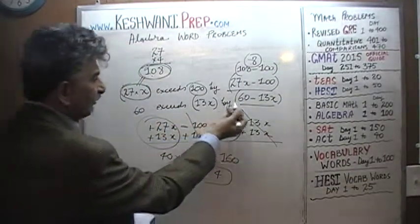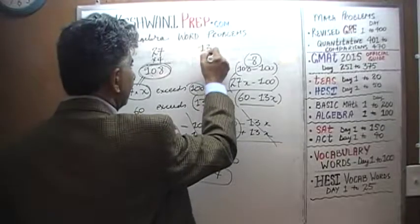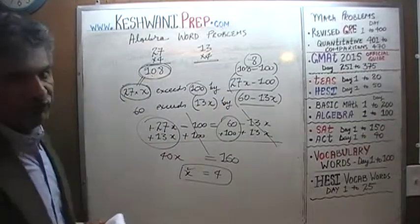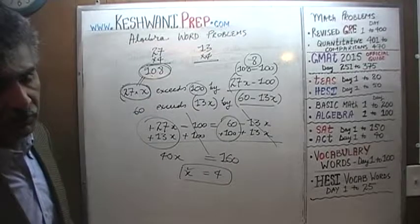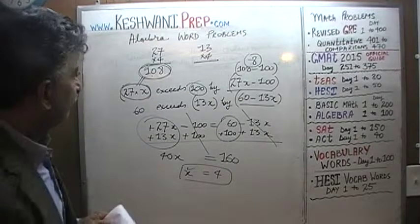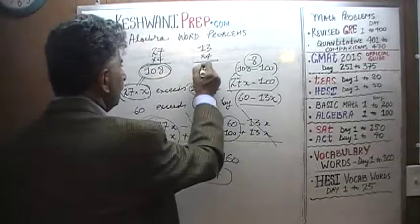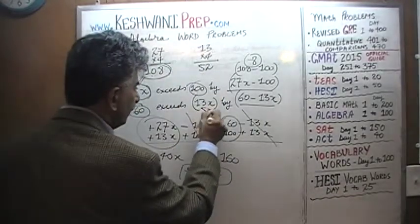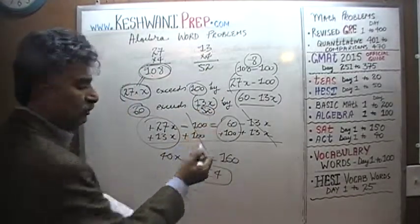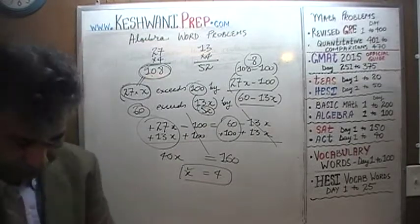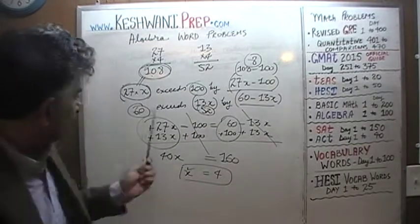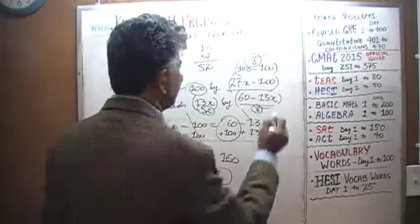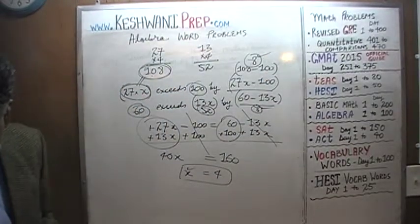Now check the other side: 60 exceeds 13X. 13 times 4 is 52 — double 13 to get 26, double again to get 52. And 60 exceeds 52 by 8. Both quantities equal 8, so our answer is correct.